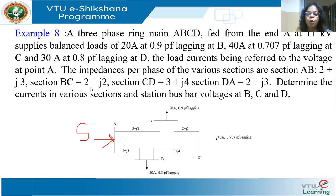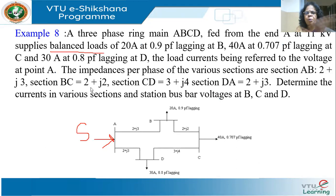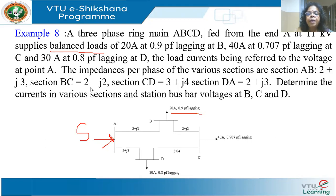There are a number of balanced loads. Since the load is balanced, I can solve everything on a single phase equivalent using basic network theory — simple KCL and KVL. At B, there is 20 amperes at 0.9 PF lagging. At C, there is 40 amperes at 0.707 PF lagging. And at D, there is 30 amperes at 0.8 PF lagging.